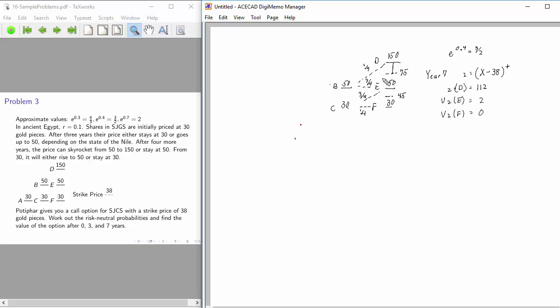Now, let's work out the year 3 values. If we're at node B, we have a probability of 1 fourth that the option will be worth 112. We have a probability of 3 fourths that it will be worth 12. But that's in year 7 dollars. To go from year 7 dollars to year 3 dollars, we have to divide by 3 halves. In other words, we have to multiply by 2 thirds. That gives us 28 plus 9 times 2 thirds or 74 thirds. In the next class, I'm going to derive this number by quite a different procedure involving designing a perfect hedge.